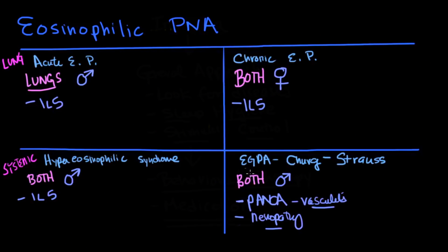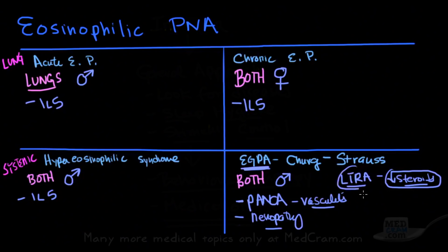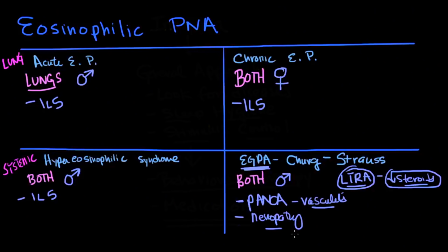The theory is that when patients are put on leukotriene receptor antagonists, they're able to reduce the steroids needed for asthma. When those steroids are reduced, it tends to cause Churg-Strauss disease to emerge. This has led some to believe there is a connection between LTRAs and this disease, but that is hotly debated. With EGPA or Churg-Strauss syndrome, the biggest issue for morbidity and mortality is cardiac. It is typically seen in asthma.